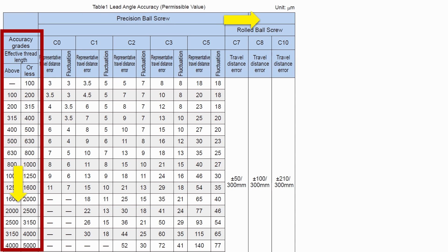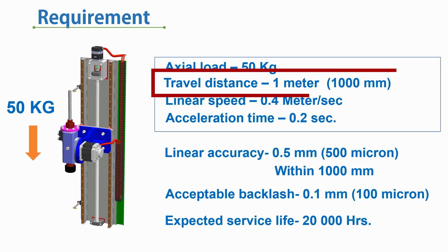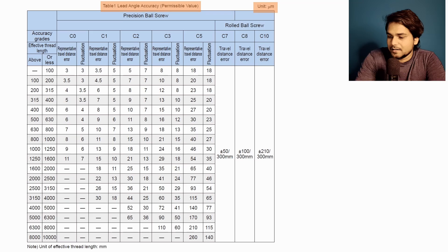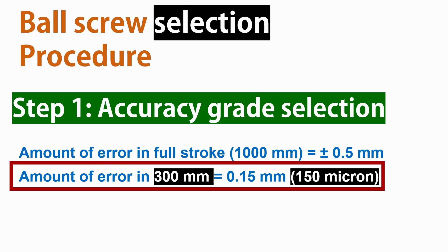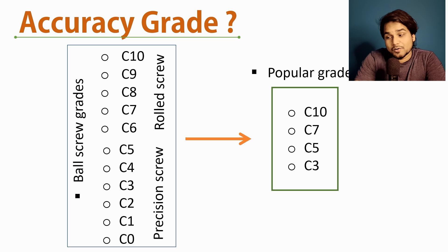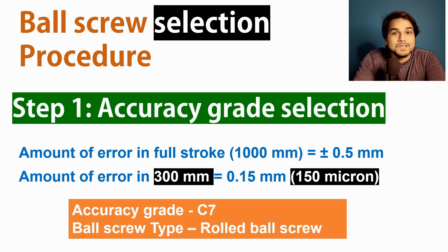In the table, grades are on the x-axis and the range of screw length is on the y-axis. We can check the travel error for a specific grade at a specific screw length. Our required stroke length is 1 meter and acceptable travel error is 150 microns per 300 mm. For 1 meter length in C8 grade, lead angle accuracy is ±100 microns per 300 mm, which is close to our requirement. However, I prefer C7 grade because C8 is not a popular grade and may not be easily available, and C7 is also a rolled ball screw so there is not much cost difference. Our selected grade is C7, rolled ball screw.